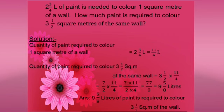Next sum: 2 and 3 by 4 liters of paint is needed to color 1 square meter of a wall. How much paint is required to color 3 and a half square meters? Quantity for 1 square meter is 2 and 3 by 4 liters, which as an improper fraction is 11 by 4. For 3 and a half square meters: convert 3 and a half to 7 by 2. Multiply 7 by 2 into 11 by 4: 7 into 11 by 2 into 4 equals 77 by 8, which is 9 and 5 by 8 liters.